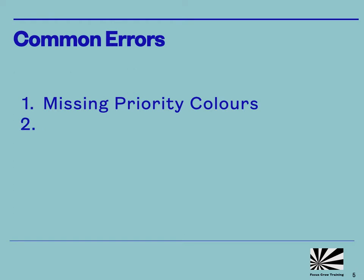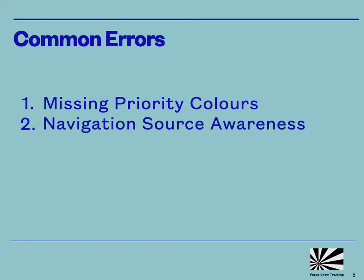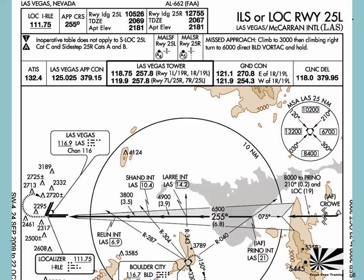The second EFIS-related problem we often see is pilots forgetting which navigation source they have selected. Typically, this will happen when workload is high and there is a need to make quick changes to the navigation source — during a missed approach procedure, for example. Prior to this approach, the pilot will have switched from en-route navigation, FMS for example, to the localiser as primary navigation source.